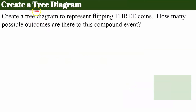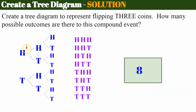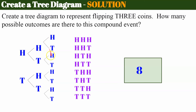All right, here we go. I want you to create a tree diagram of flipping three coins. Please pause, create your tree diagram, and come back when you're ready. Welcome back. You should have three different events. The first event — when I flip the coin once, I can get heads or tails. Then for the second flip, each branch splits into heads or tails. Now for the third flip, every one of my second outcomes branches into heads or tails again.